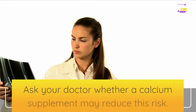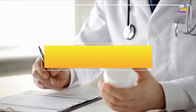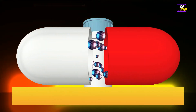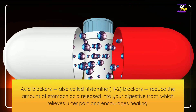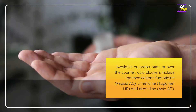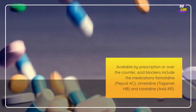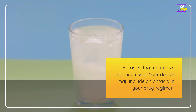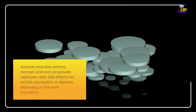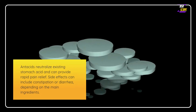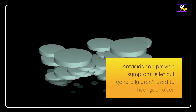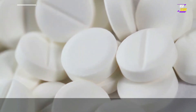Medications to reduce acid production: acid blockers, also called histamine H2 blockers, reduce the amount of stomach acid released into your digestive tract, relieving ulcer pain and encouraging healing. Available by prescription or over-the-counter, acid blockers include famotidine (Pepcid AC), cimetidine (Tagamet HB), and nizatidine (Axid). Antacids neutralize existing stomach acid and can provide rapid pain relief, though side effects can include constipation or diarrhea. Antacids can provide symptom relief but generally aren't used to heal your ulcer.